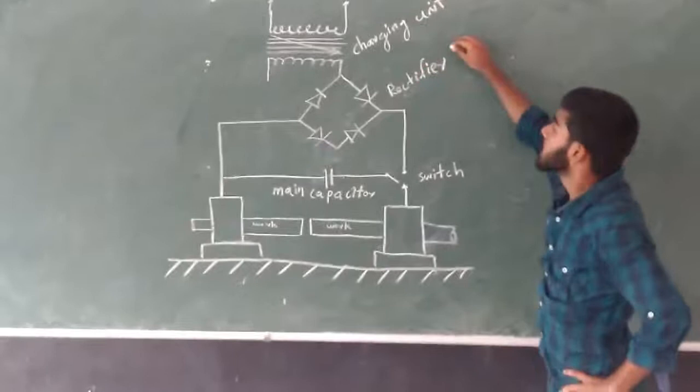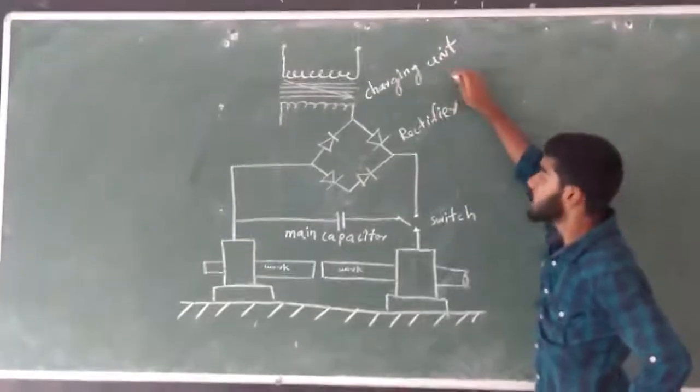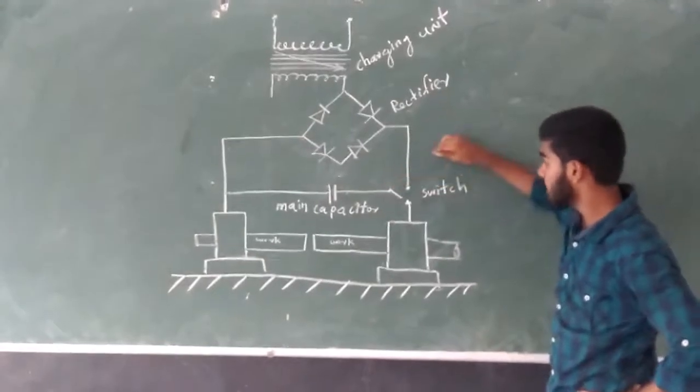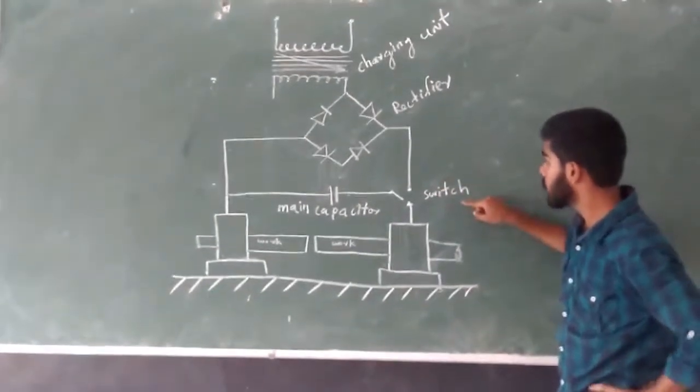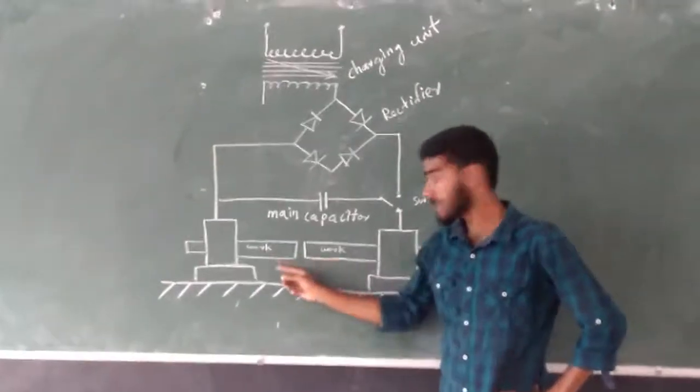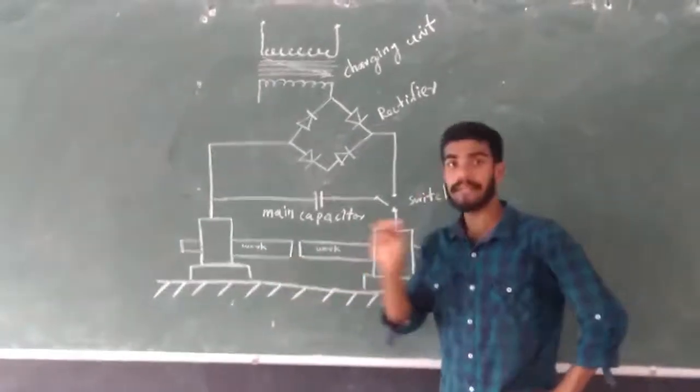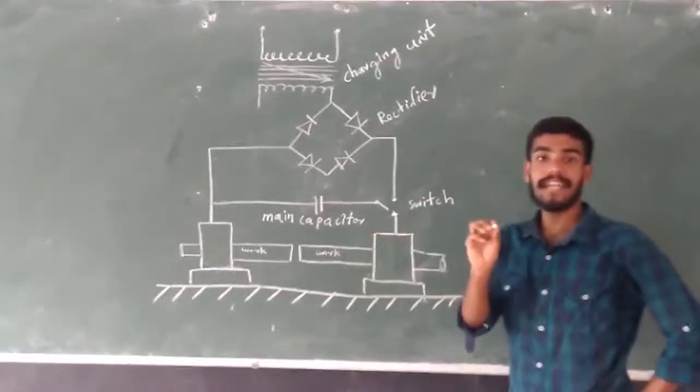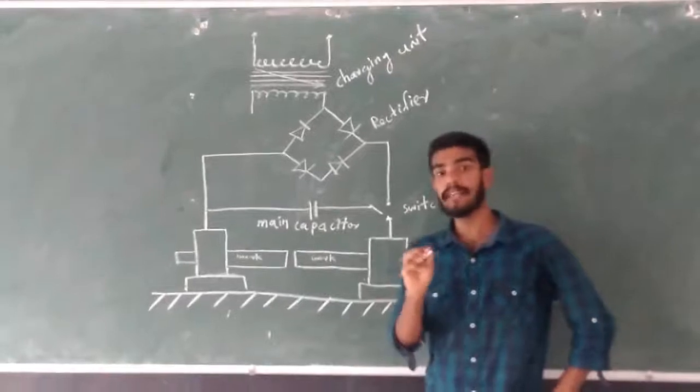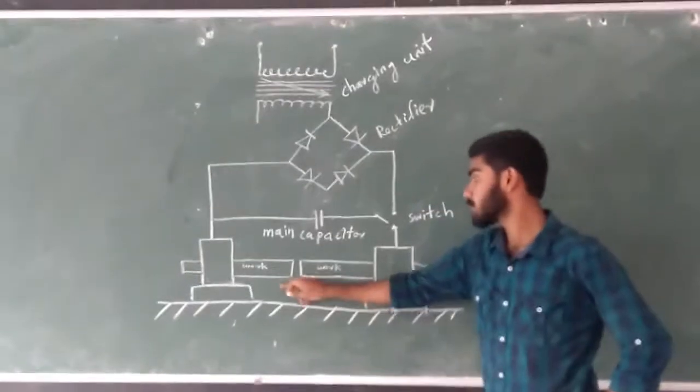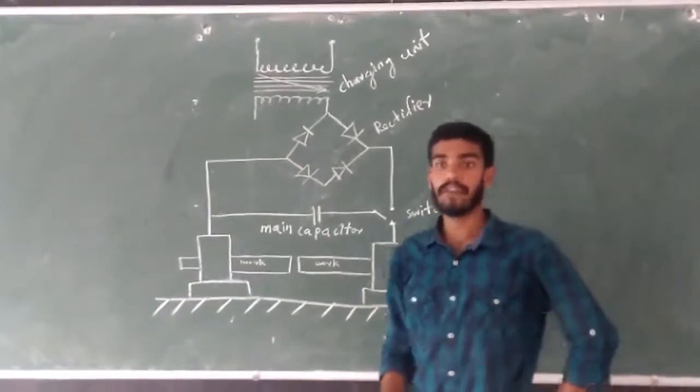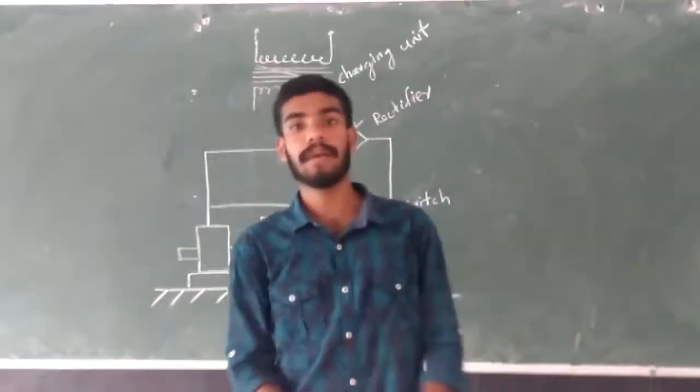That is electric charge is given by charging unit. Charging unit is carried out to a reactive main capacitor and here we have a switch. This is the arrangement of the workpiece that is two dissimilar metals. That is the specialty of this welding. Here we are joining two dissimilar metals. That is here the two workpiece.